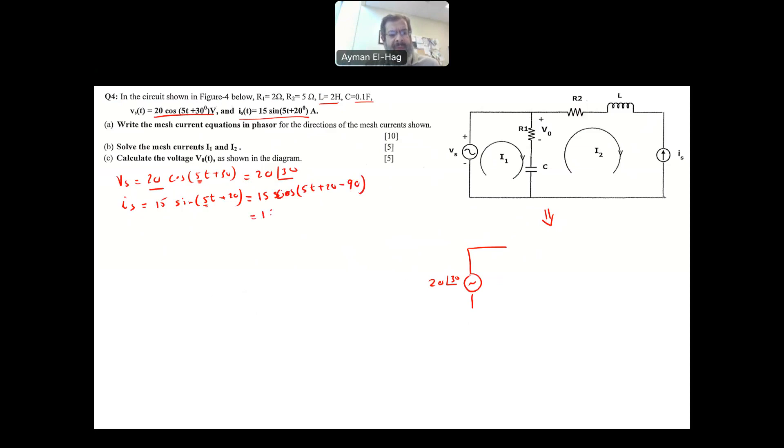The second supply is I of S equals 15 sine 5t plus 20. Notice here the omega in both supplies is the same, and for AC analysis to be used, this is a must, that you should have only one frequency in the circuit. This is a sine, I need to convert the sine into a cosine. It's very simple: 15 cosine 5t plus 20 minus 90.